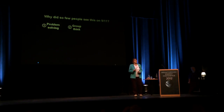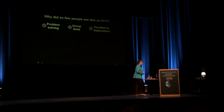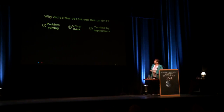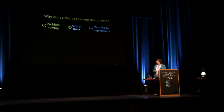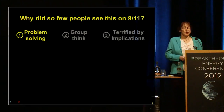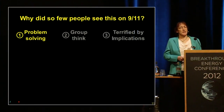There are three main things that keep people from seeing what's going on: problem-solving skills, groupthink, peer pressure, and the fact that they're terrified by the implications. We're going to focus on the problem-solving aspect.